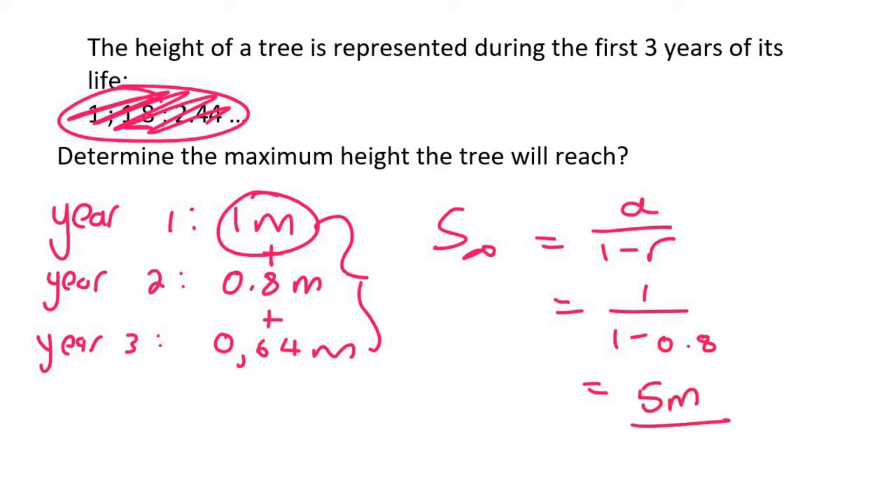And that will give us 5. This means the tree will only reach a maximum height of 5 meters. Because these numbers, as we keep going, they become smaller and smaller and smaller. And eventually they will reach 0. What that means is that the tree will stop growing.